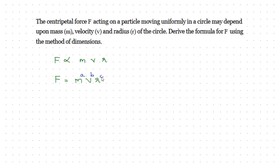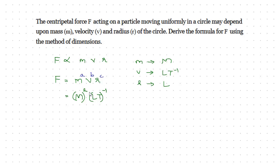Now let's write the dimensional formulas. For mass M, the dimensional formula is M. For velocity V, the dimensional formula is L T raised to minus 1. For radius R, the dimensional formula is L. For force F, using F equals mass into acceleration, the dimensional formula is M L T raised to minus 2.